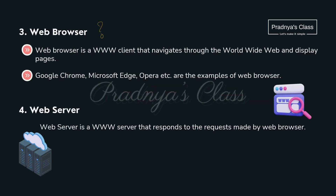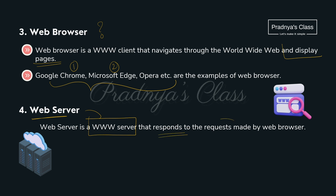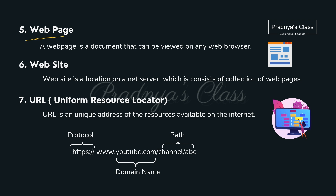What is a web browser? It is used to display web pages. Examples include Google Chrome and Microsoft Edge. There is also the web server — a WWW server that gives a response to requests made by the browser. A web page is a document on the internet, and a website is a collection of web pages — just like a book is a collection of pages.